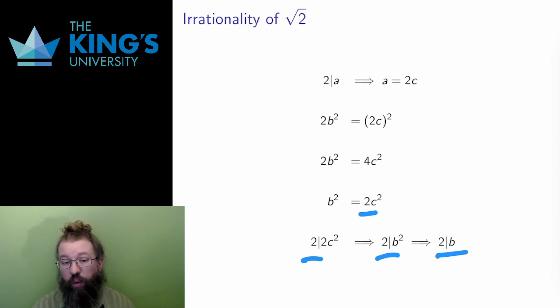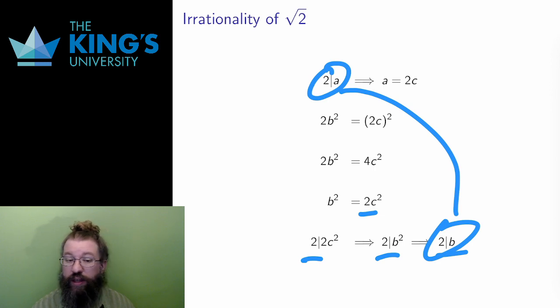What I've shown here is that both a and b are even. But I assumed that a and b had no common factors, that the fraction a over b was reduced. This is a contradiction. The assumption that root 2 is rational led to a situation where a and b cannot have a shared factor, but do have a shared factor.